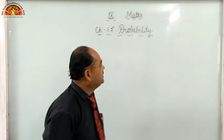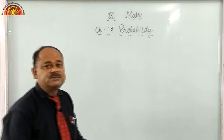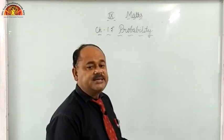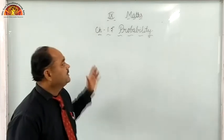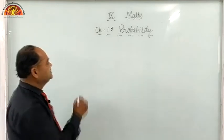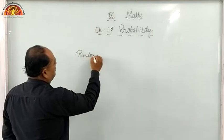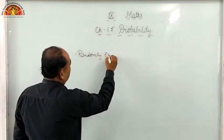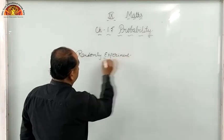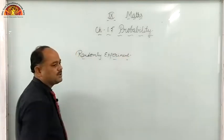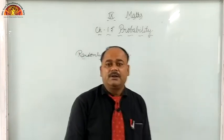Chapter 15, Probability is a very easy chapter. It is conceptual, so understand it carefully. In Class 8th also you discussed probability. For probability, basically we have a random experiment — an experiment in which all possible outcomes are known but the definite outcome is not known.